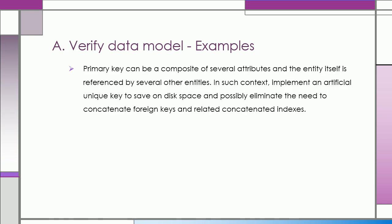Primary key can be a composite of several attributes, and the entity itself is referenced by several other entities. In such context, implement an artificial unique key to save on disk space, and possibly eliminate the need to concatenate foreign keys and related concatenated indexes.